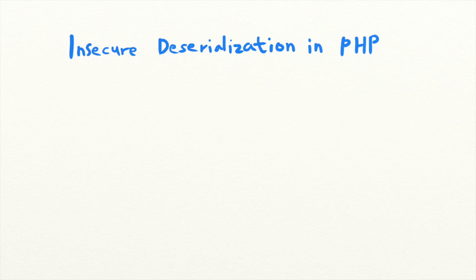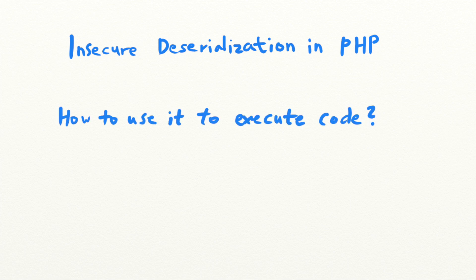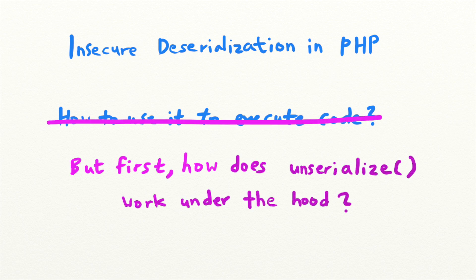Another way of exploiting insecure deserialization vulnerabilities is using it to execute arbitrary code on the vulnerable machine. To understand how this works, you will first need to understand how the unserialize function works under the hood.